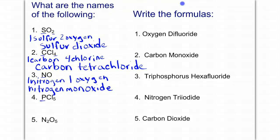We have in number four, one phosphorus and five chlorines. So that's going to be called phosphorus pentachloride.